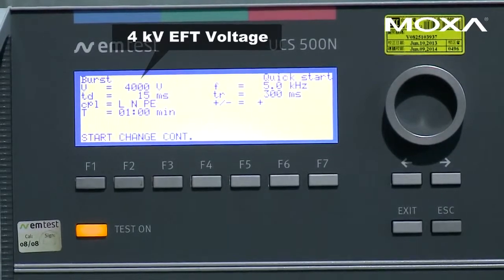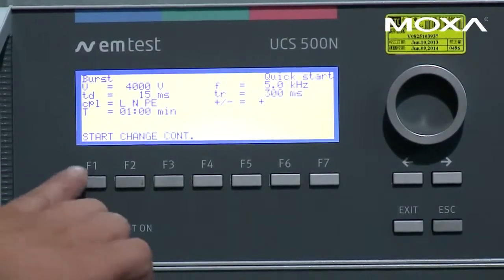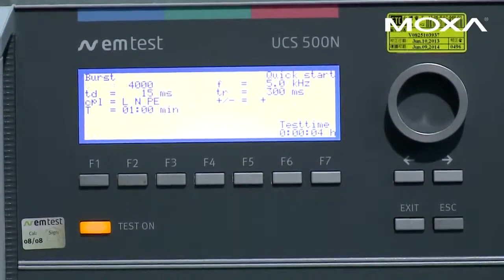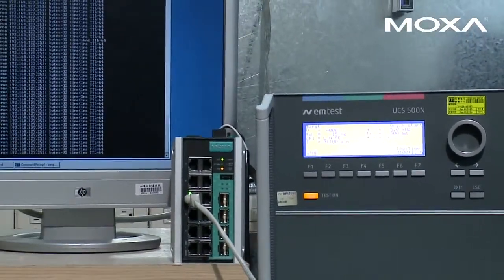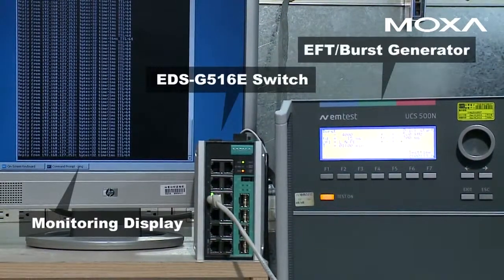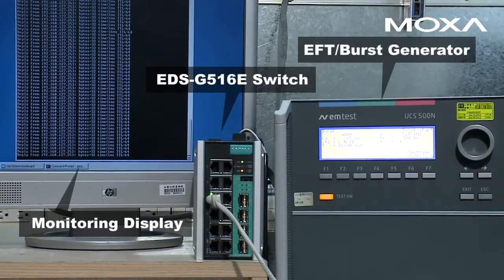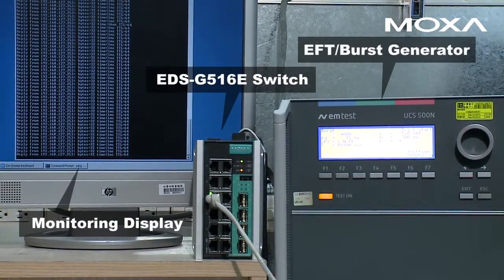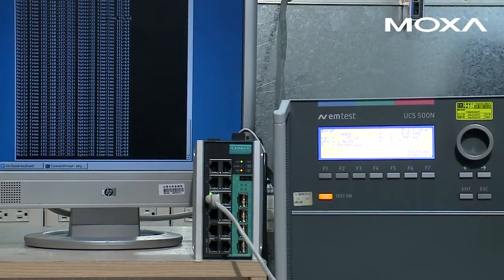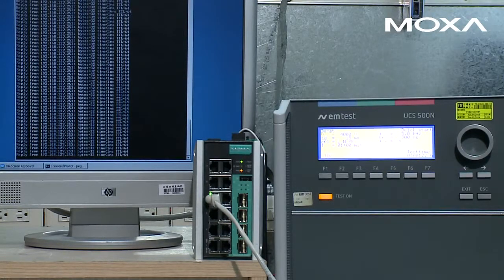Bursts of electrical fast transients are caused by operation of motors and electromechanical switches and can damage internal circuitry. In this test, we injected transient voltages as high as 4 kilovolts into the switch. With level 4 EFT protection, EFT injections did not affect the performance of the switch.